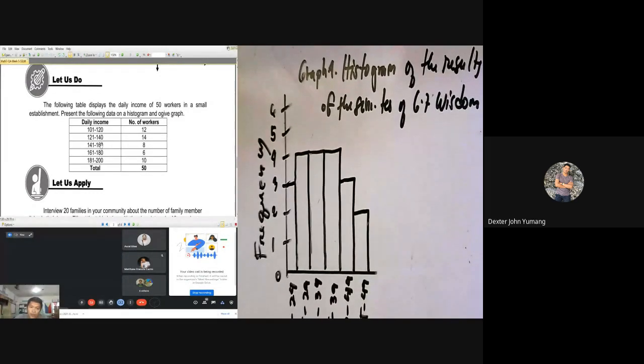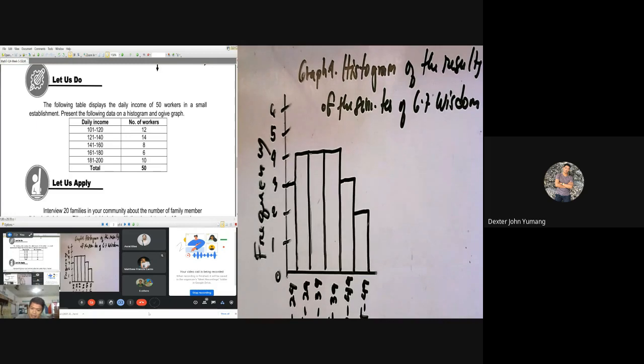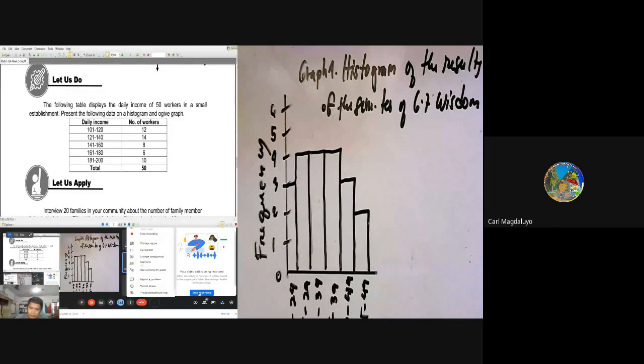Gagawa po kayo ng histogram. So ito yung data: 101 to 120, 121 to 140, 141 to 160. Take note: the number of workers is 12, 14, 8, 6, and 10. May kinalaman ba itong total? Wala pong kinalaman ng total dyan. Itong daily income at saka number of workers, yan lang po yung gagamitin ninyo. Now I would like you to do that one in siguro mga 20 minutes and submit your answer in our Facebook page. So goodbye everyone, thank you and God bless.